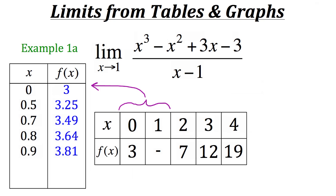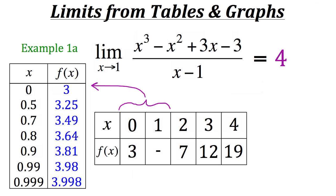To be more confident about the limit, we extend to more decimal places. x equals 0.99 gives an output of 3.98, and x equals 0.999, which is extremely close to 1, gives an output of 3.998. Based on this table, as our x values approach 1 but don't equal 1, our output values get closer and closer to 4, so we can say the limit of this function as x approaches 1 is 4.